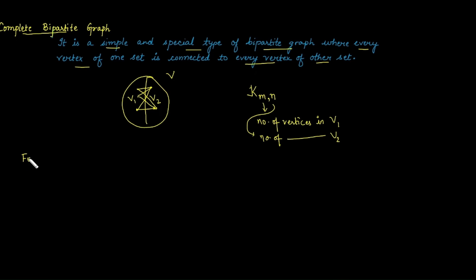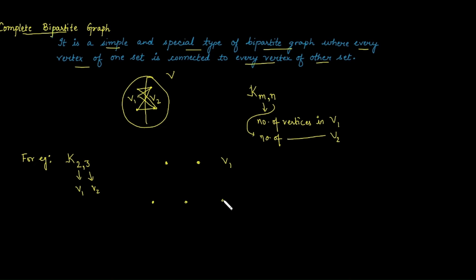For example, the complete graph K2,3 means it is a bipartite graph with two vertices in set V1 and three vertices in set V2. For the complete bipartite condition, every vertex from V1 is connected with every vertex of V2. This gives us the complete bipartite graph K2,3.